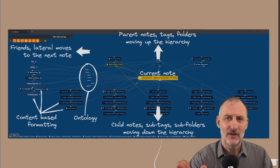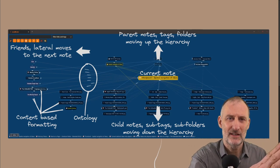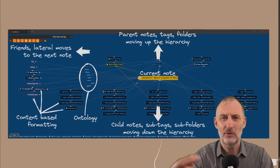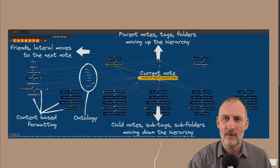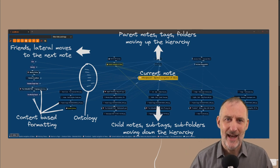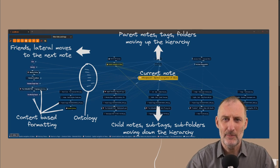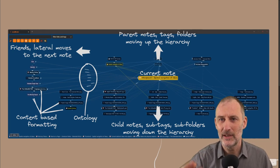I have the lateral thoughts on the side. So these are nodes that are in a different hierarchy, but are related to my note. On the lines, I have the ontology of the notes or the connections.